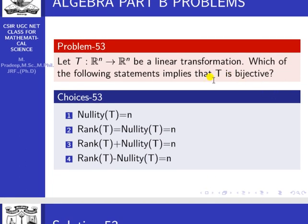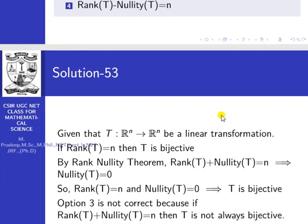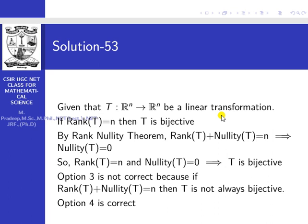For T to be bijective, the matrix of the corresponding linear transformation should be non-singular. That means the rank of T should equal n, since the order of the corresponding matrix is n×n. We know the rank-nullity theorem: rank of T plus nullity of T equals n. If rank of T equals n, then nullity of T equals 0. So rank of T equal to n and nullity of T equal to 0 implies T is bijective.